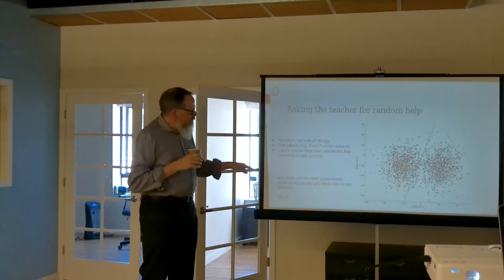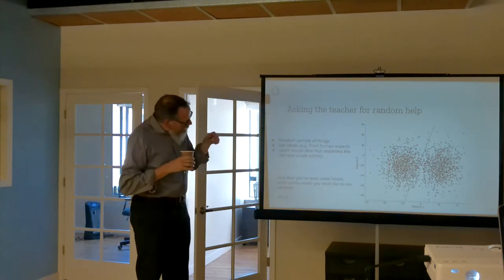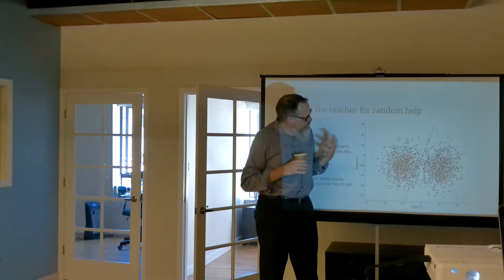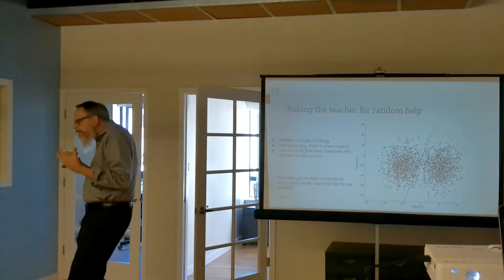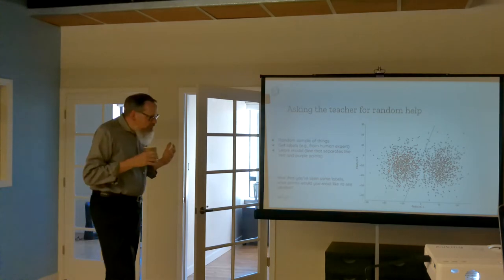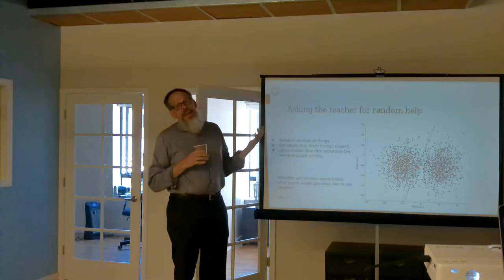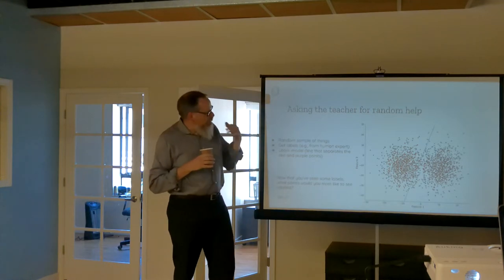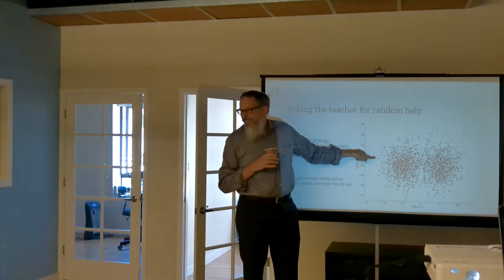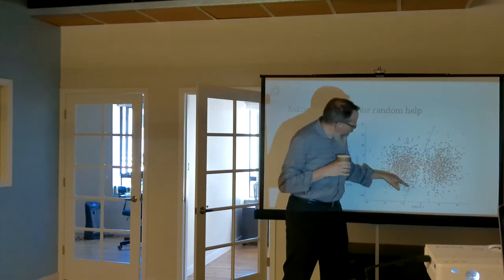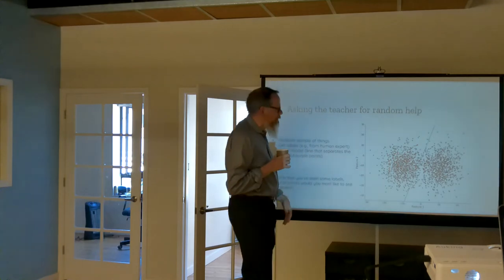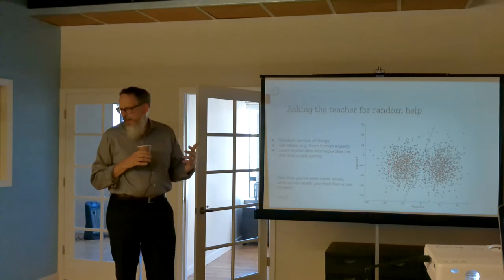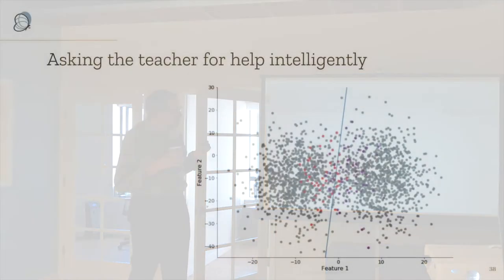Instead, once you've seen some labeled data and you can see there are reds here and purples there with some confusion in the middle, you should ask the teacher about examples in that uncertain region — where they're overlapping. You're pretty sure the far-off points are red or purple, but there's confusion in between. Active learning uses the model you're learning to guide which examples to label next — asking for labels where the model is most uncertain and getting more resolution in that confusing space.